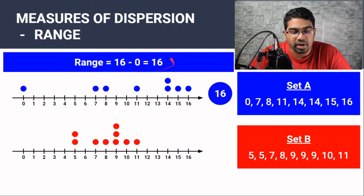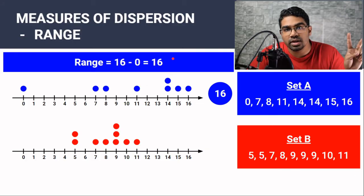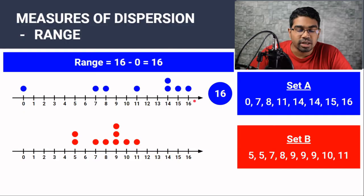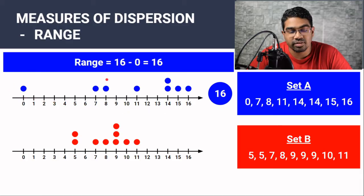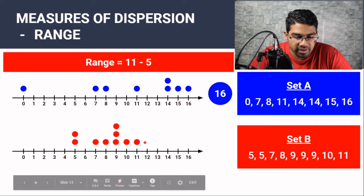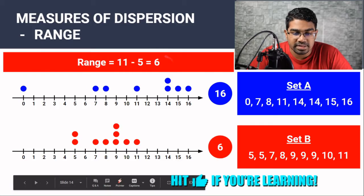As we can see from the calculation, the range only takes into account two values in the whole set of data. And therefore, it might give an inaccurate picture of the dispersion, especially when the highest value or the lowest value is quite far away from the group of data, as is the case in set A. For set B, the highest value is 11 and the lowest value is 5. So the range is simply 11 minus 5, which is 6.